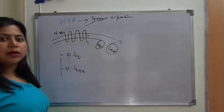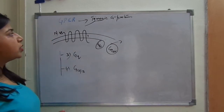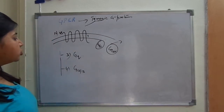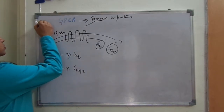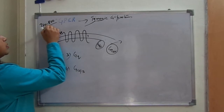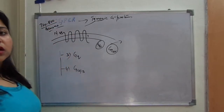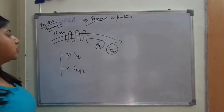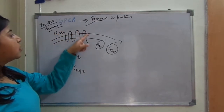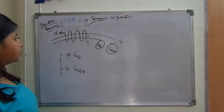Hello everyone, welcome back to BioCarryon. We were talking about G-protein coupled receptors present inside our cells. The human genome contains about 720 to 800 G-protein coupled receptors — this is the largest class of receptors present in our genome. G-protein coupled receptors span the membrane seven times and are also known as serpentine receptors.